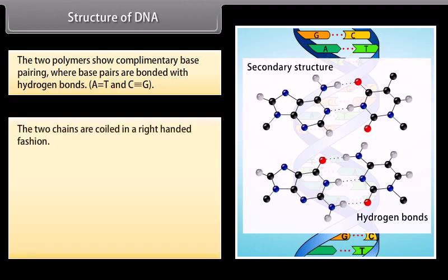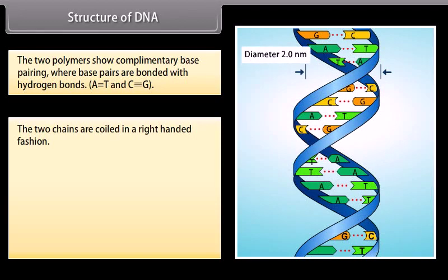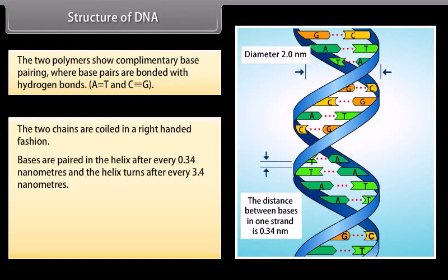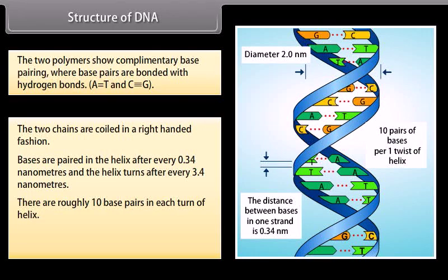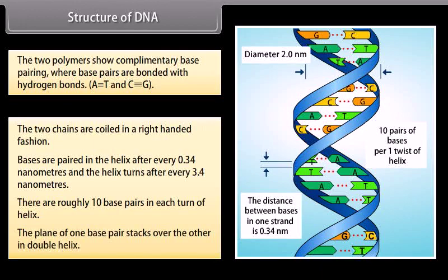The two chains are coiled in a right-handed fashion. Bases are paired in the helix after every 0.34 nanometers, and the helix turns after every 3.4 nanometers. There are roughly 10 base pairs in each turn of the helix. The plane of one base pair stacks over the other in the double helix.